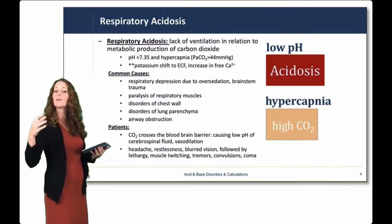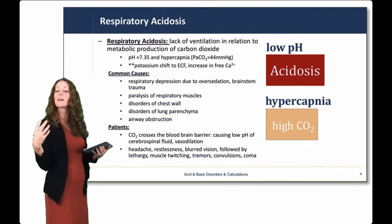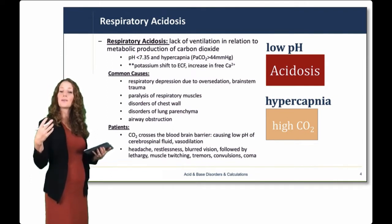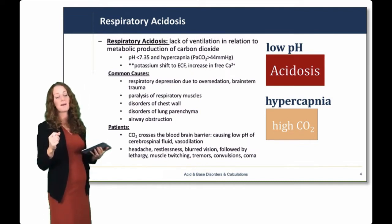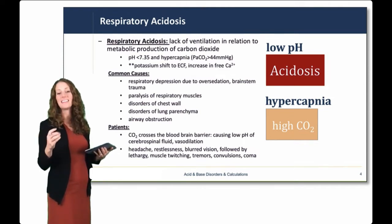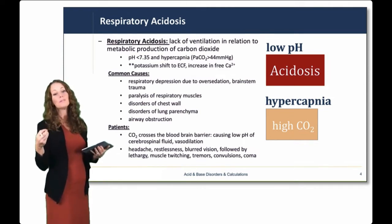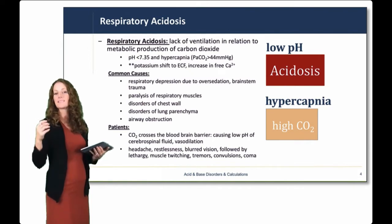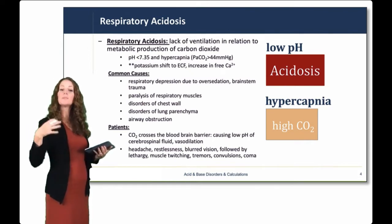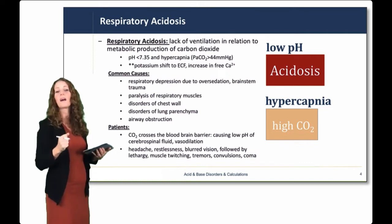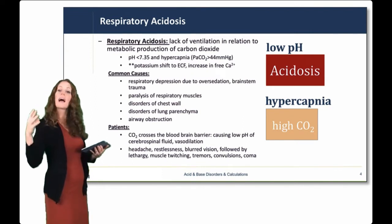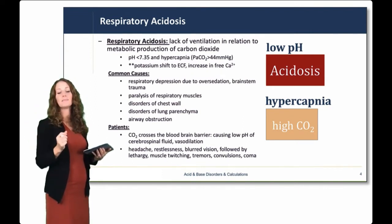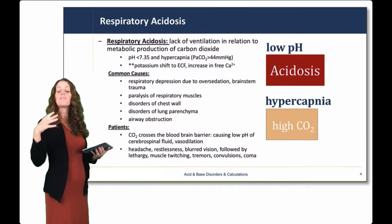Where does carbon dioxide come from? It comes from the cells undergoing cellular respiration. In our metabolism lecture, we talked about oxidative phosphorylation and the Krebs cycle producing carbon dioxide waste. The respiratory system is responsible for removing that carbon dioxide waste. If there's a problem in the respiratory system, such as a lack of appropriate ventilation, that carbon dioxide waste builds up and effectively becomes an acid in the body.